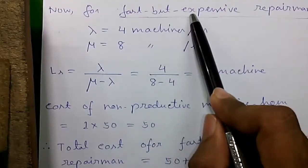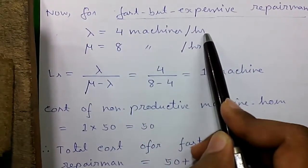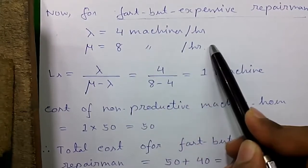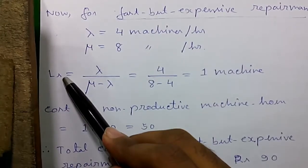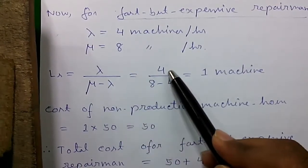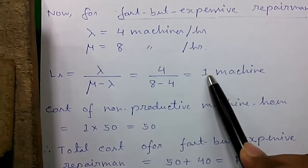And now for fast but expensive repairmen lambda equals to 4 machines per hour which is constant and mu is 8 machines per hour the repairing capacity. So Ls becomes lambda divided by mu minus lambda that's equals to 4 divided by 8 minus 4 that's equals to 1 machine.